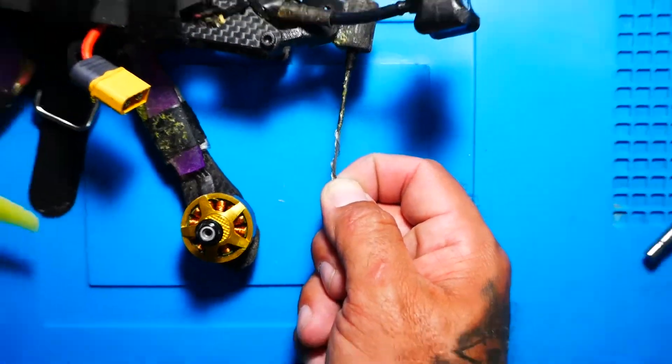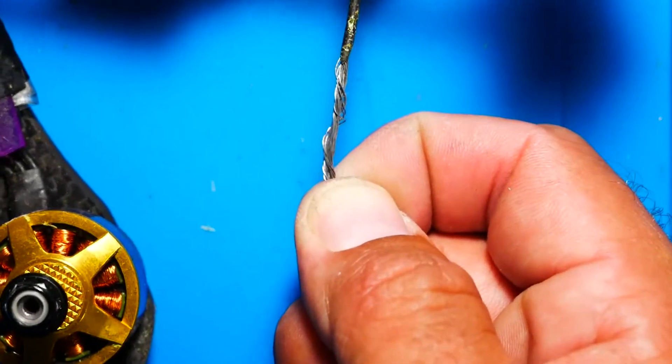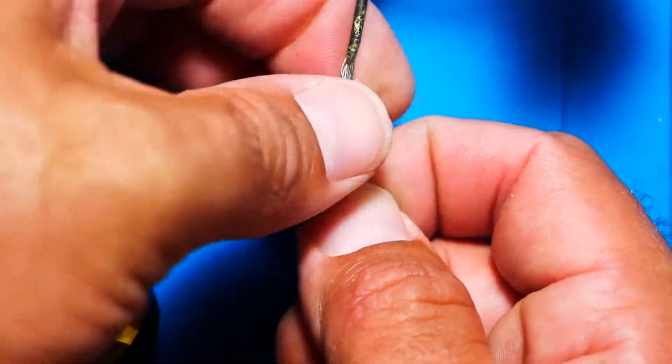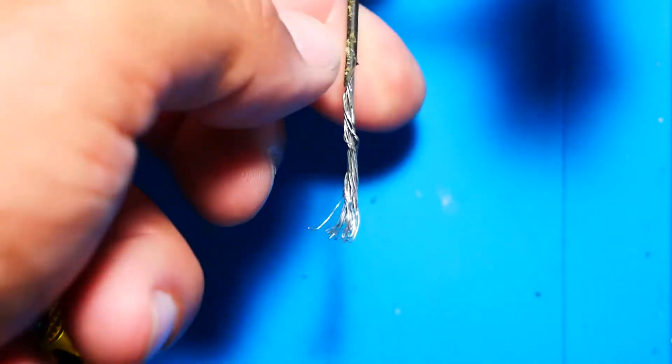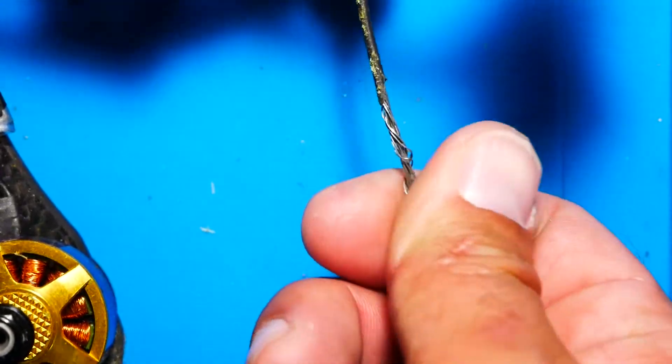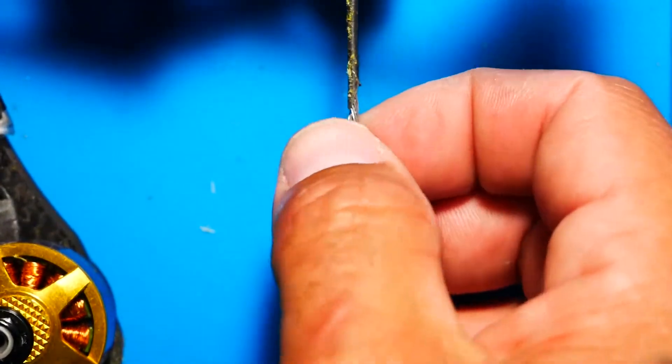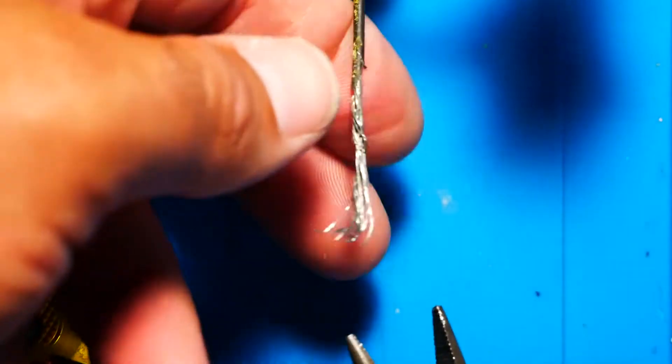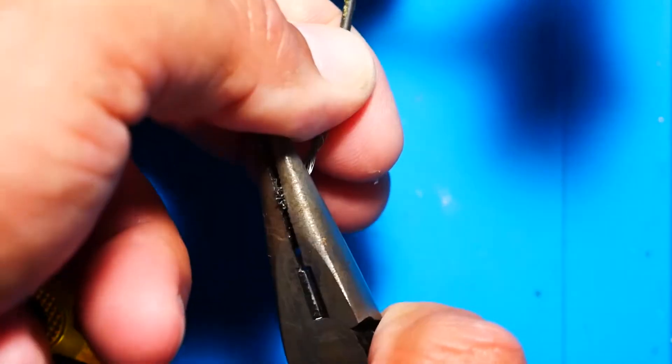This is the idea that we are going for, and yours can be neater and cleaner or whatever. The next thing we're going to do is we are going to do the same concept, except we're going to use a pair of pliers or something that you may have laying around, and you're going to twist them up again.